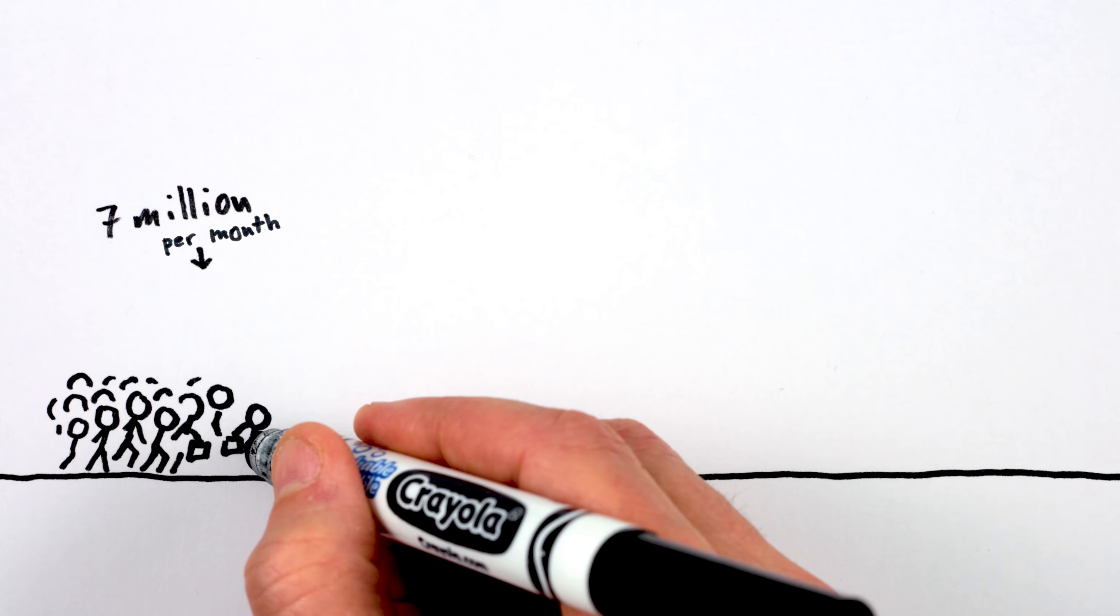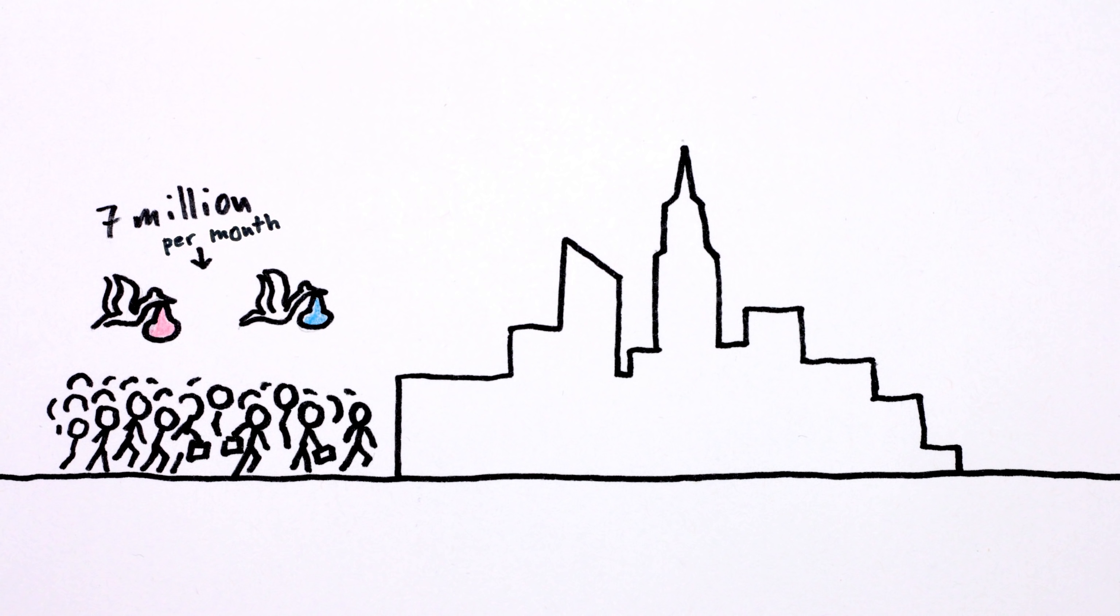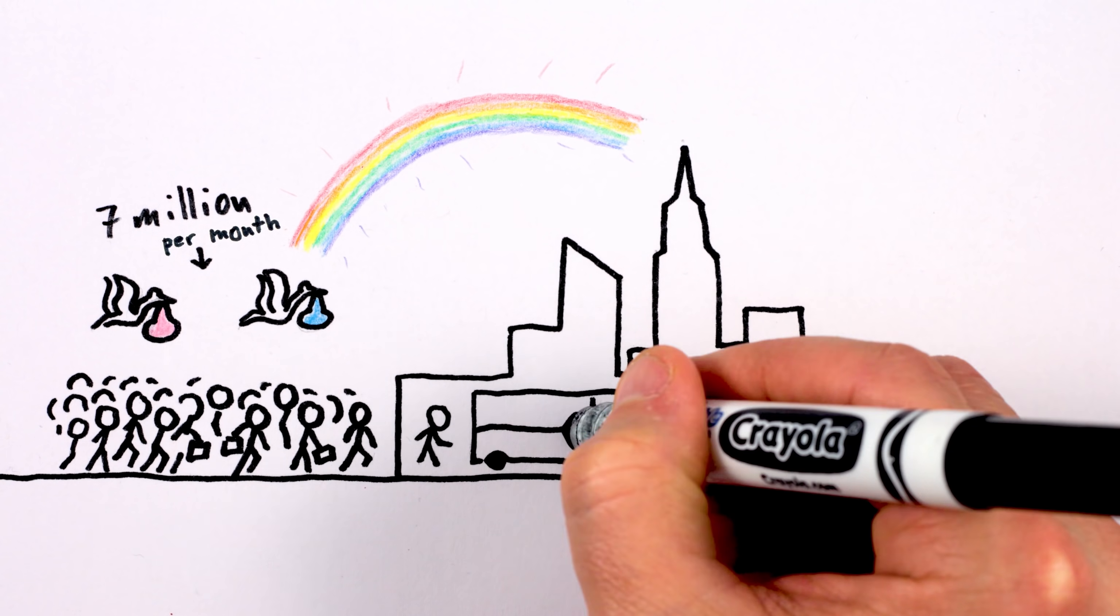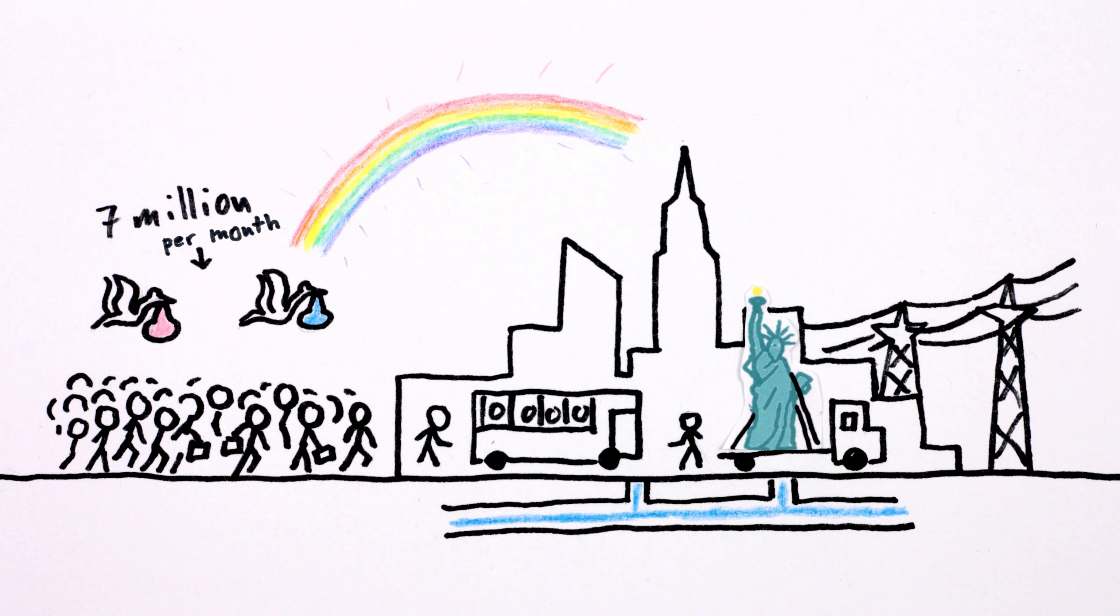Around the world, almost 7 million people move to or are born in cities every month, which can be super efficient, because when people live close to each other, it's easier to move people, power, water, and basically everything else around.